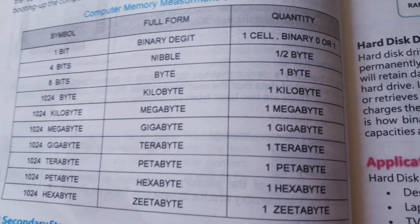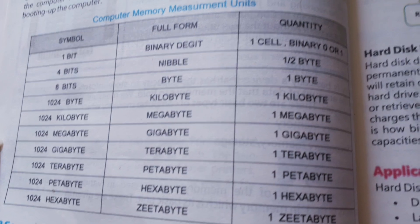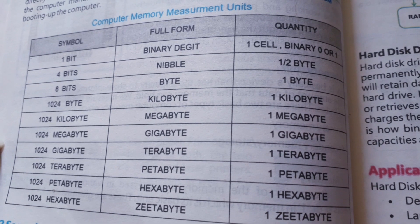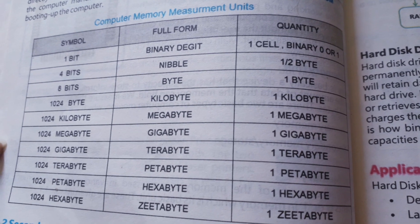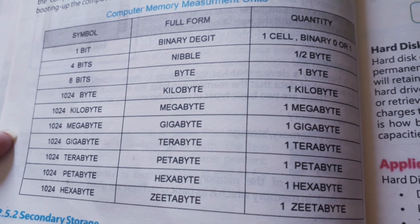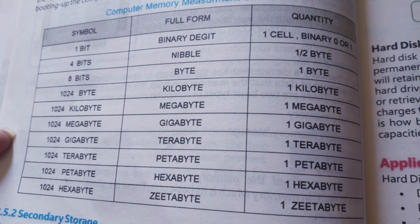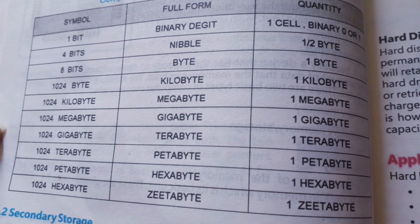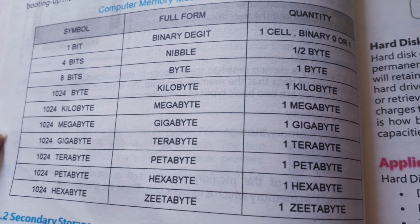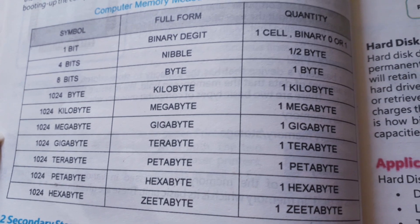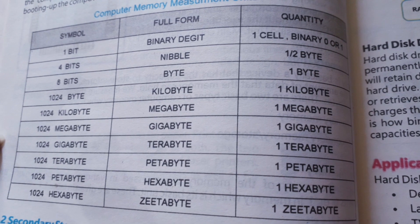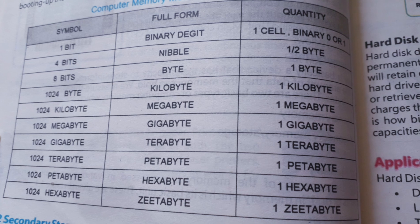Students, these are memory units — computer memory units. We know that 1 bit is 0 and 1, and with 8 bits there is 1 byte. But I have seen here that if there are only 4 bits, we call it a nibble. So this was a new thing, and after this all the other memory units are coming.